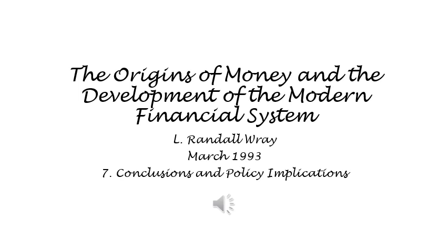Thus, commodity money — a riskless representation of the social unit of account — was used as a reserve. Privately issued money liabilities were made convertible into commodity money merely to enhance circulation, but the quantity of these was never constrained by the quantity of commodity money in existence. This helps to make it clear that an exogenous money system is not possible in an economy that is based on nominal accumulation.